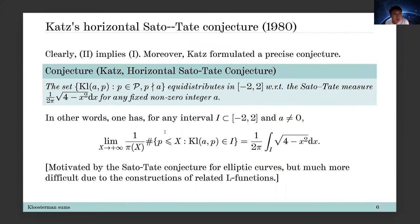Regarding the second and first questions, if you can prove a certain equidistribution you can conclude sign changes of Kloosterman sums with prime moduli. There is a precise conjecture known as the horizontal Sato-Tate conjecture. In this situation, Katz considers a fixed non-zero integer a and makes p run over all good primes. For any given interval I between minus two and two, there are proportional primes such that these Kloosterman sums fall into the given interval.